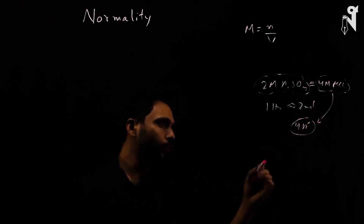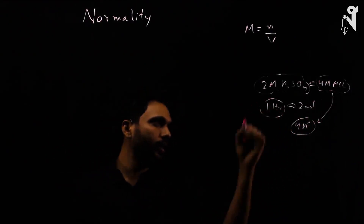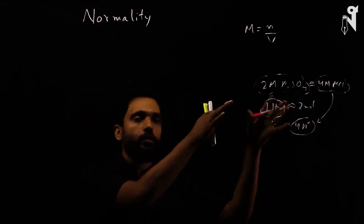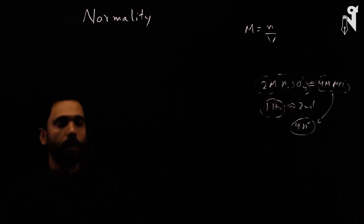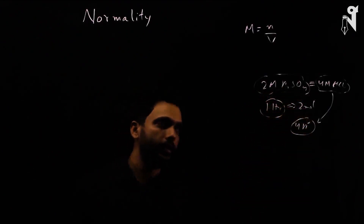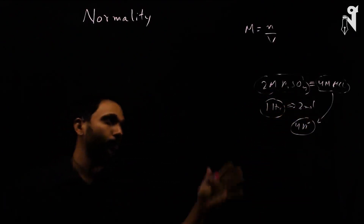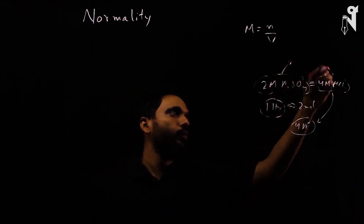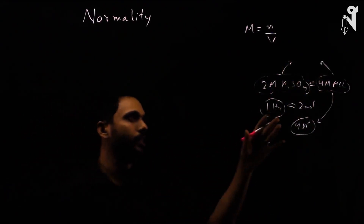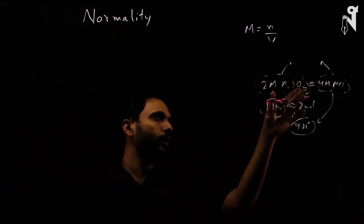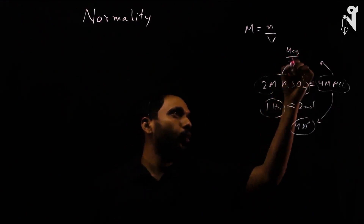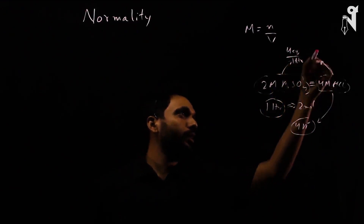Both furnish four H⁺ ions in one liter of water. So if I'm using this acid with a base, 2 molar H₂SO₄ and 4 molar HCl would behave the same way. Since they are the same thing, why not describe them with the same concentration? Two moles in one liter is as good as four equivalents in one liter.